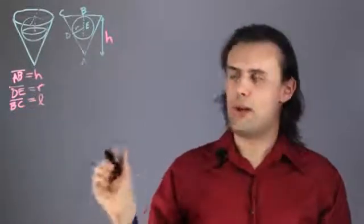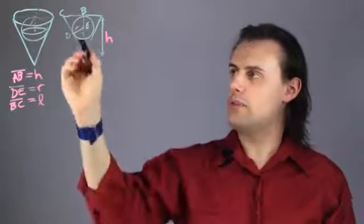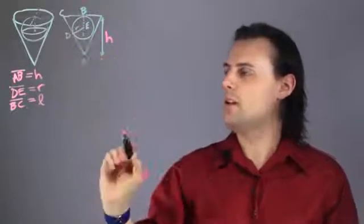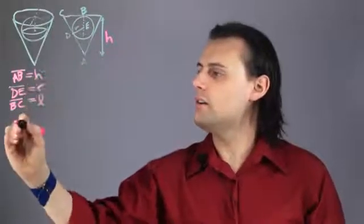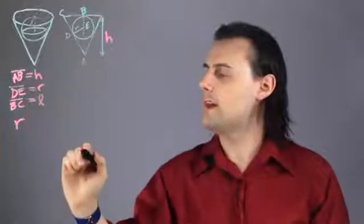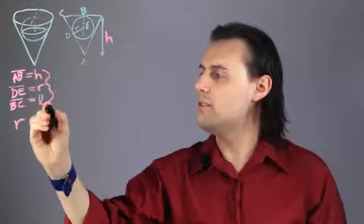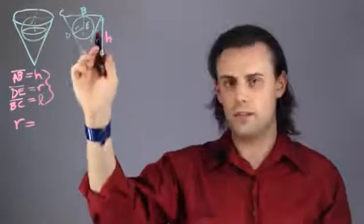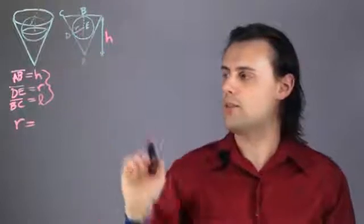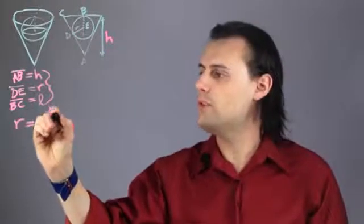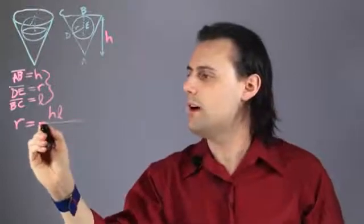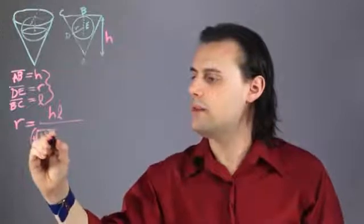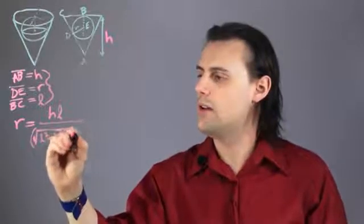So the equation that one ultimately derives for the sphere that's maximized inside of the cone will depend on these two variables, H and L. So I can relate these three lengths in the following fashion. The radius of my sphere that will maximize its volume inside of the cone is going to be equal to H times L divided by the square root of L squared plus H squared plus L.